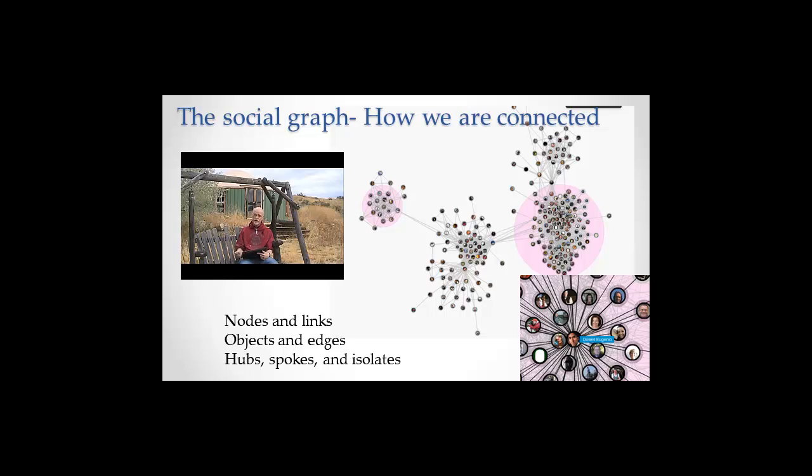I actually got this off of Facebook. If you want to go to Facebook and search for social graph, you can download the Facebook app that will give you your social graph. Social graph is no more than a picture of you and all the people that you know on Facebook and who's interconnected to who. Not only who are you connected to but who are they all connected to. If you're not connected to somebody on Facebook, it won't show up on the social graph.